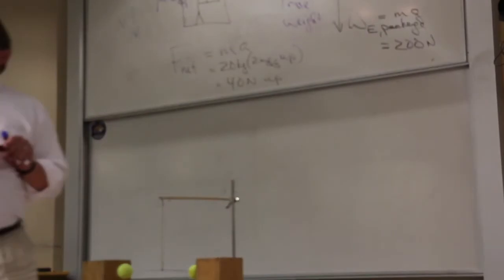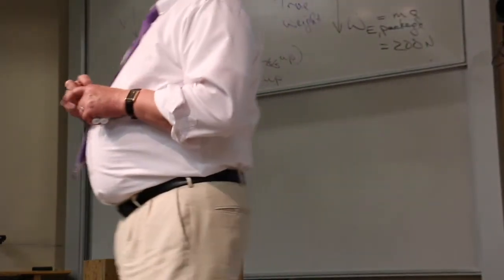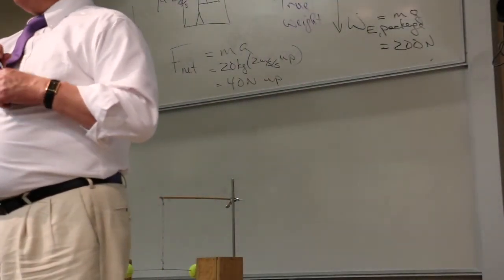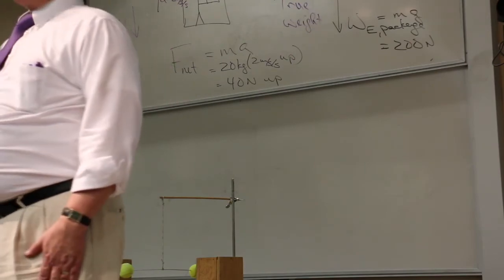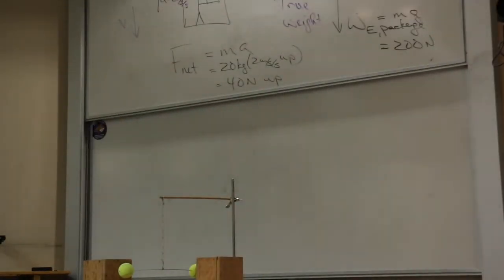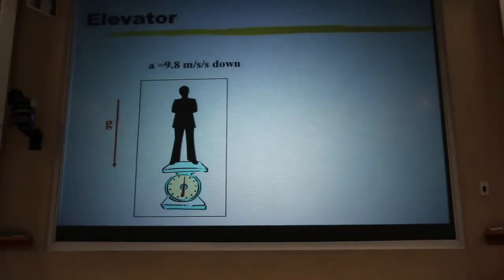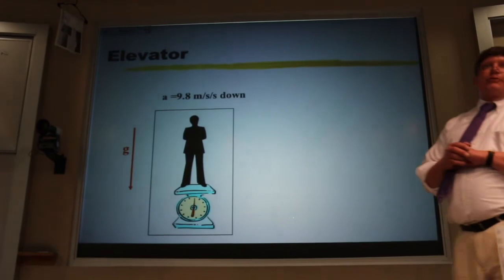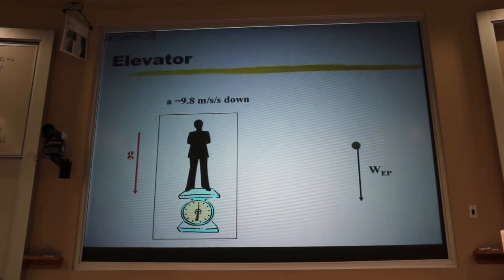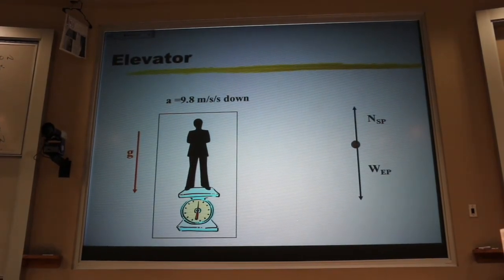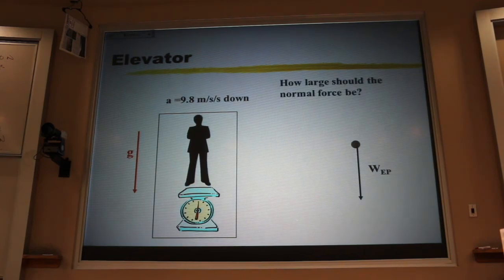Now, folks, notice I did not pull out a formula for apparent weight. There is no formula for apparent weight in the book. There is no formula on the exam. You use Newton's second law to find the apparent weight. Now, let's look at this special case where the acceleration is down, and it's 9.8 meters per second per second. That's free fall. If I look at the free body diagram, how big should that normal force be if I'm in free fall? Zero. See that man go up? Isn't that clever?